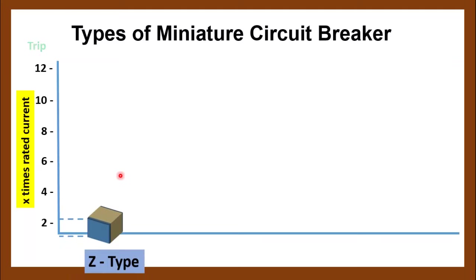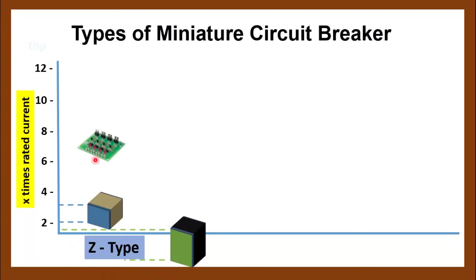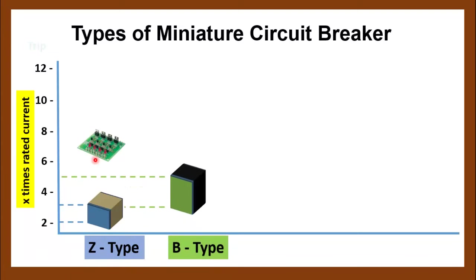The first type is the Z-type circuit breaker, which is the most sensitive among all types of miniature circuit breakers. It will trip the circuit whenever the current exceeds two times the rated current. This type of circuit breaker is mainly used to protect semiconductor devices such as thyristors (TRIACs) or SCRs.